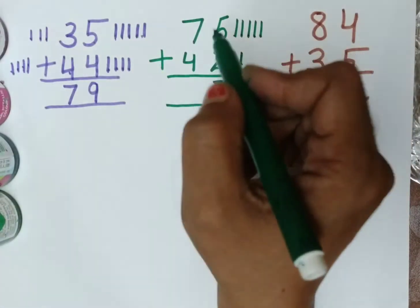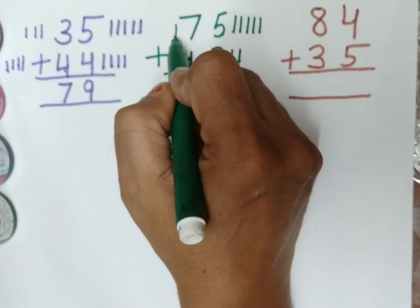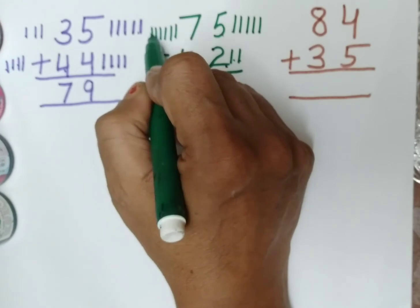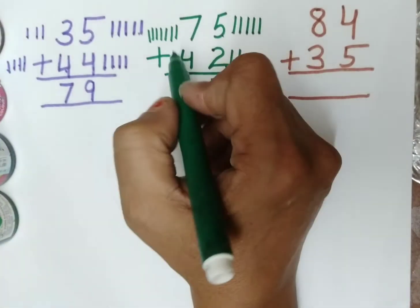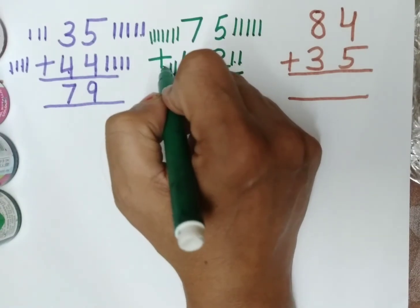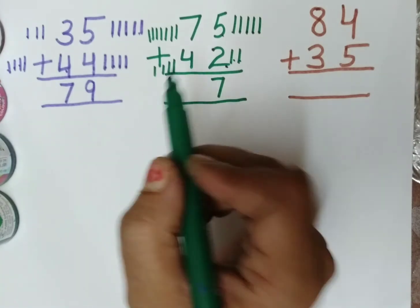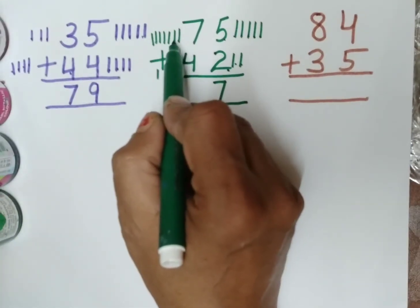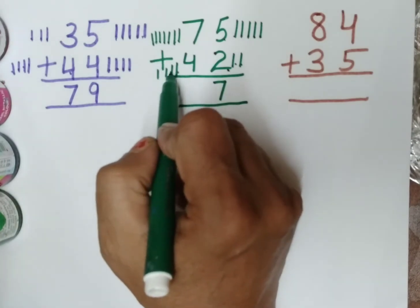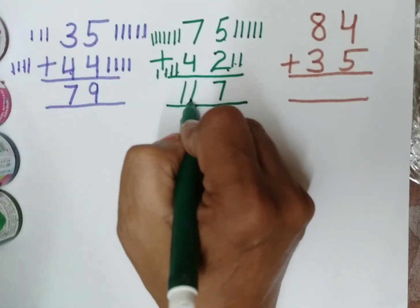Now we will count the 10s place number. What is this? Yes, this is 7: 1, 2, 3, 4, 5, 6, 7. And what is this? This is 4, so we will count 4 lines: 1, 2, 3, 4. Now we will count all these lines together: 1, 2, 3, 4, 5, 6, 7, 8, 9, 10, 11. So the answer of the 10s place is 11.